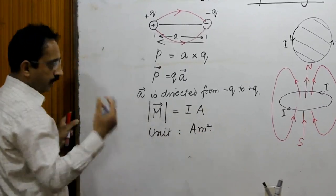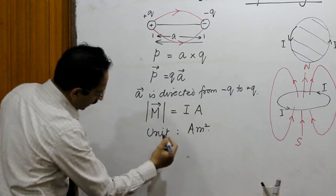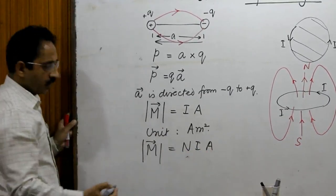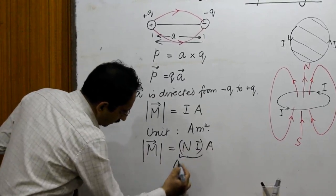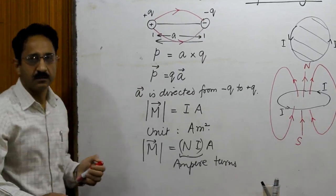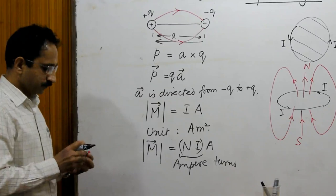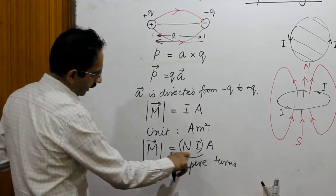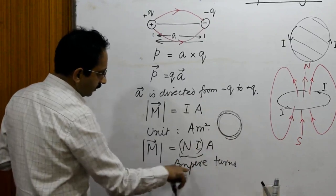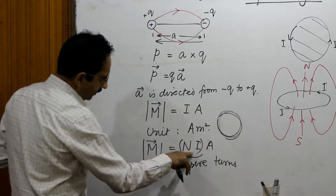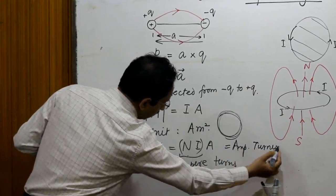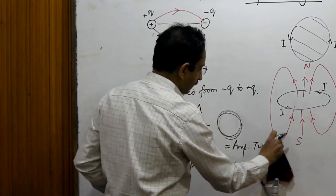If we have a coil with multiple turns (more than one), then the magnetic dipole moment is M = N·I·A, where N is the number of turns. The product N×I is called ampere-turns, which is the product of the current I multiplied by the number of turns. Therefore, the magnetic dipole moment equals the ampere-turns multiplied by the area of the turn.